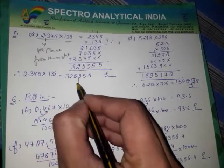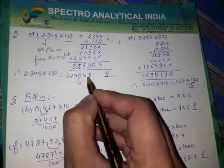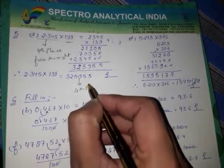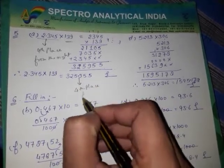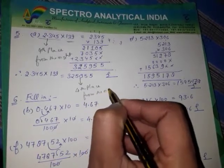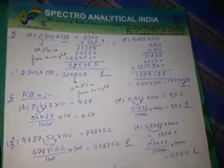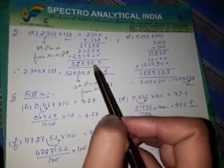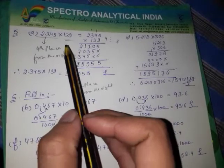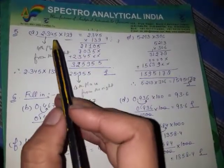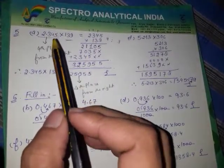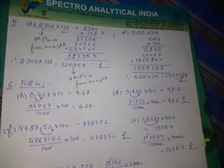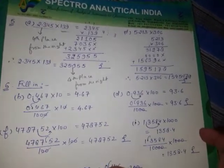तो ये जो number है 325955, इसके अंदर जो decimal point आजाएगा वो fourth place पर आएगा, fourth place from the right। तो सबसे पहले आपको कोई भी दो numbers दिये हुए होंगे, उनको simply multiply करना है, फिर decimal point को place करना है according to जो भी decimal number दे रखा होगा question में।